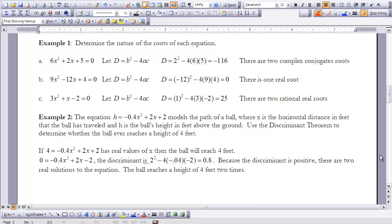In example one, we're going to look at three different quadratic equations, and we're going to determine the nature of the roots of each of those equations. So, in letter a, 6x squared plus 2x plus 5 is equal to zero. And if I evaluate my discriminant, I would find that b squared, so 2 squared minus 4 times 6 times 5 would give me a value of negative 16. So, that means my discriminant is less than zero. So, if I look in my discriminant theorem, if it's less than zero, then my roots are going to be complex conjugates.